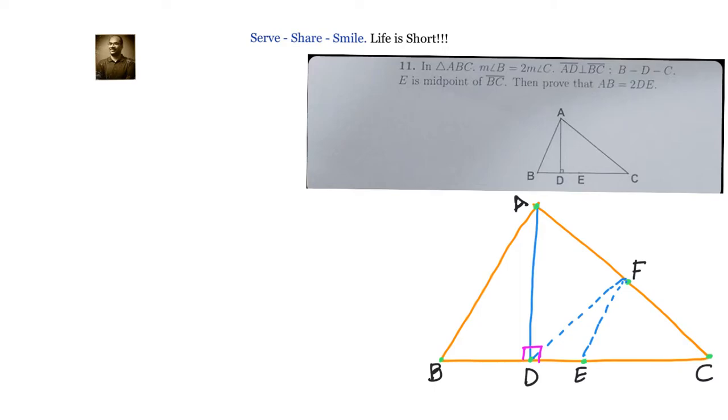Now, since line segment EF joins the midpoints of BC and AC, according to the midpoint theorem, EF is parallel to AB and EF equals half of AB.